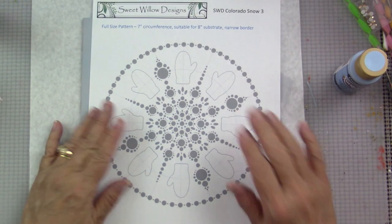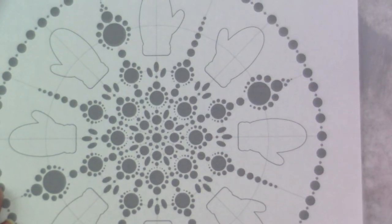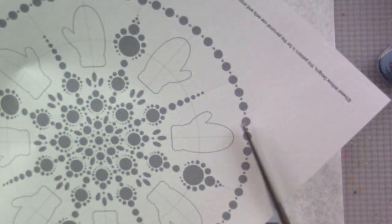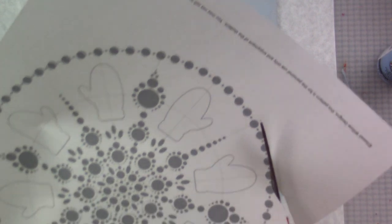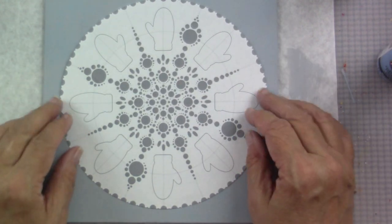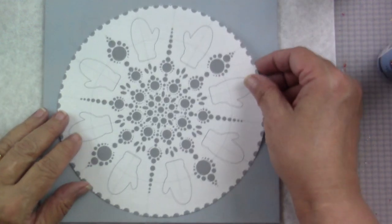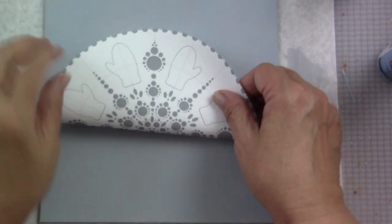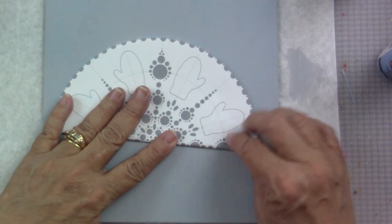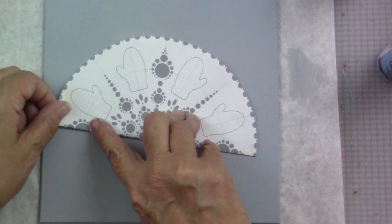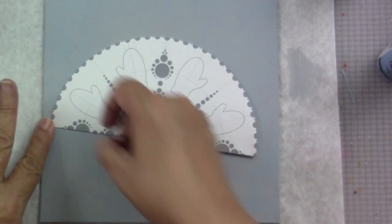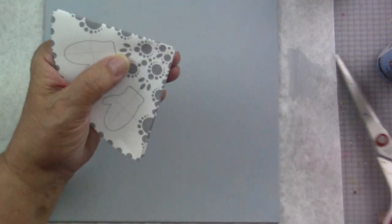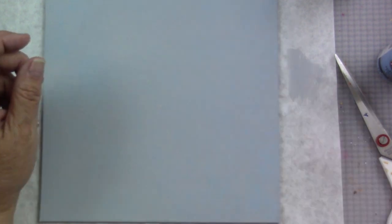Now we're ready to start our design. Here's the traceable from the e-book, and I'm going to cut this out. There's a little line on that outside row of dots. I'm going to cut right in the middle of that to give me my outside edge. We're going to fold this in quarters so I can find the center and cut that out.